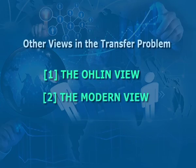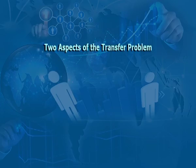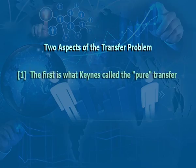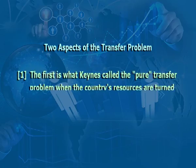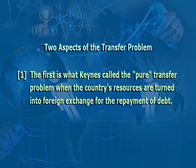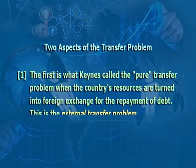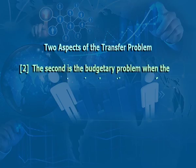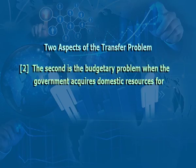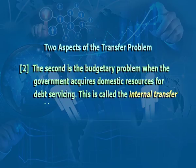Now we will have a look at the modern view, which is an extension of Keynesian analysis of the burden of reparation payments. It has two aspects of the transfer problem. The first is what Keynes called the pure transfer problem: when the country's resources are turned into foreign exchange for the repayment of debt, this is the external transfer problem. The second is the budgetary problem: when the government acquires domestic resources for debt servicing, this is called the internal transfer problem.